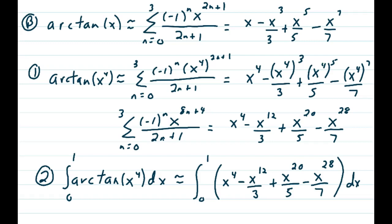And now we can integrate the arctan of x to the 4th dx by using that polynomial: x to the 4th minus x to the 12th over 3 plus x to the 20th over 5 minus x to the 28th over 7.